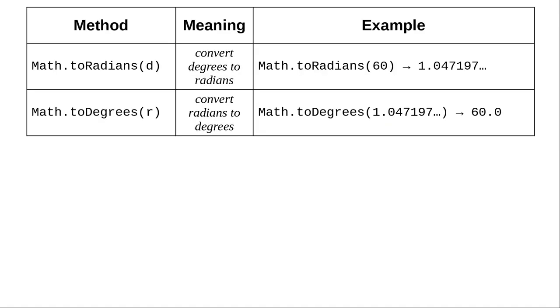People who aren't math majors expect to enter values in degrees and see results in degrees. That's why Java provides these methods for converting to radians, and converting back to degrees.